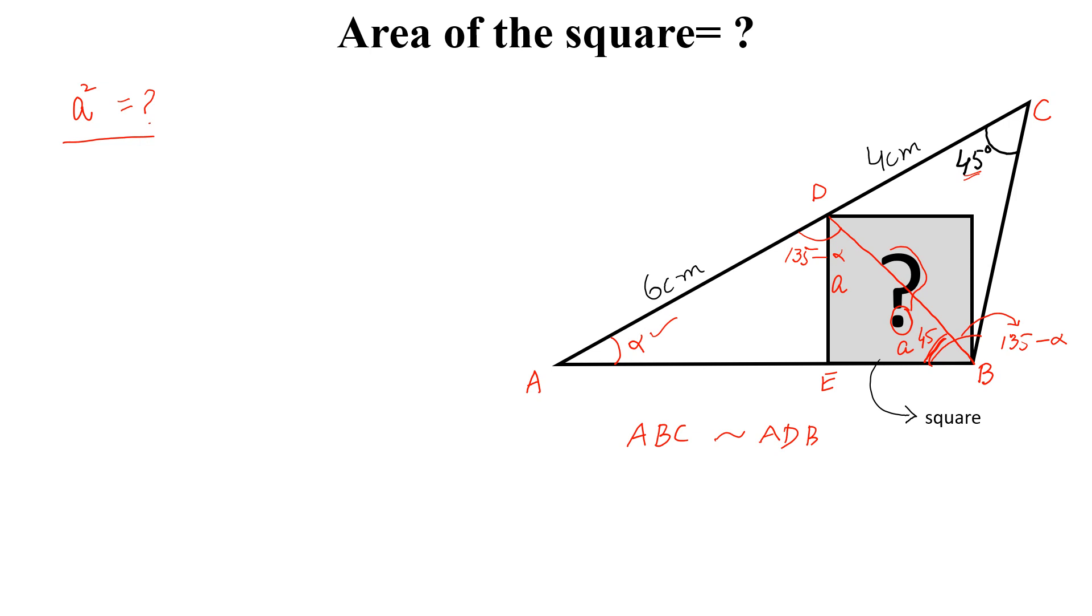And from here we get AB squared is equal to 60 and AB is equal to the length of AB is equal to square root of 60. So this length is square root of 60.